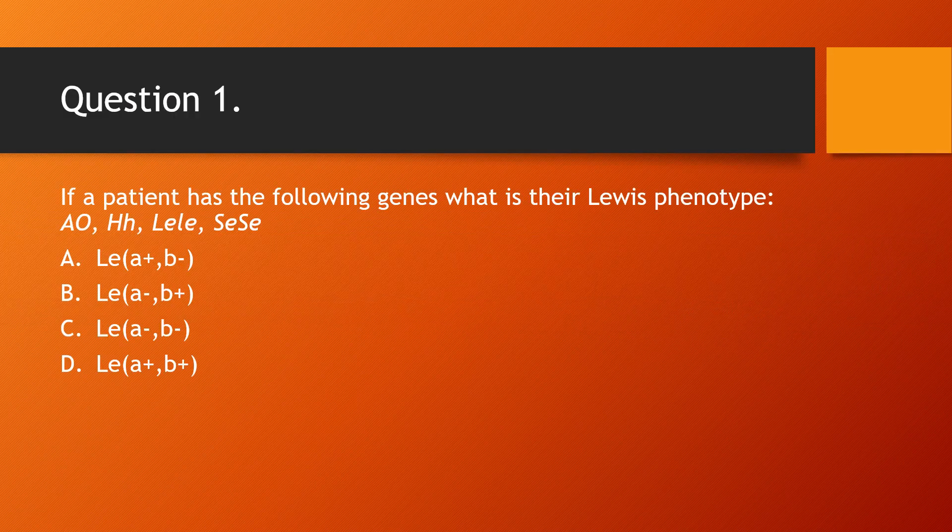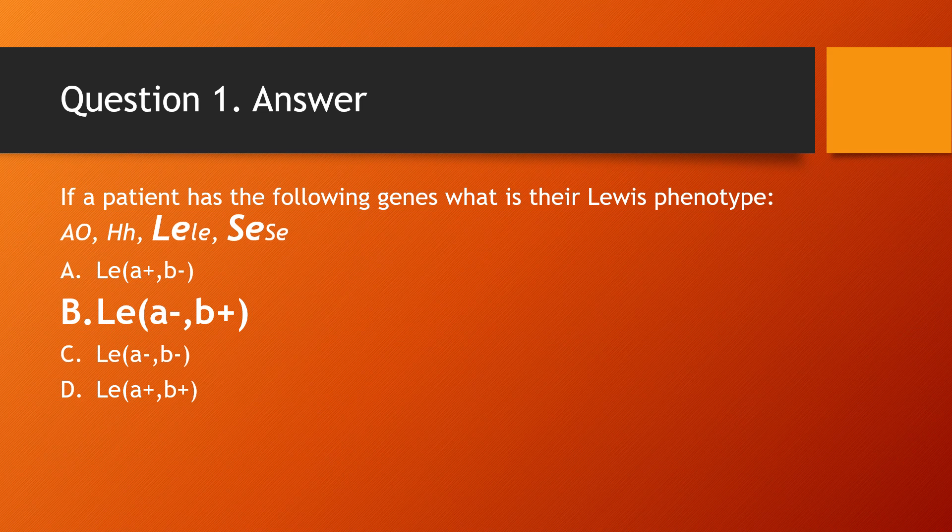Question 1: If a patient has the following genes — AO, capital H, lowercase h, capital LE, lowercase le, capital SE, capital SE — what is their Lewis phenotype? Choices: A) Lewis A positive B negative, B) Lewis A negative B positive, C) Lewis A negative B negative, D) Lewis A positive B positive. The answer is B, Lewis A negative B positive. Notice there are extra genes listed that do not affect the Lewis type. First ask: does the person have the capital LE gene? Yes. Then ask: do they have the capital SE gene? Yes. Therefore, the type is Lewis A negative B positive.